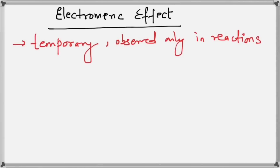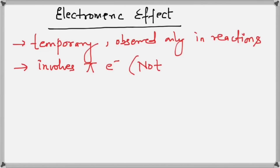On the contrary, the inductive effect which we saw earlier was a permanent effect, meaning it was always present whether the molecule was reacting or not. The second point of difference is that the electromeric effect involves the pi electrons, which means a double bond or triple bond must be present. So it is not observed in alkanes — most commonly the electromeric effect is observed in alkenes.